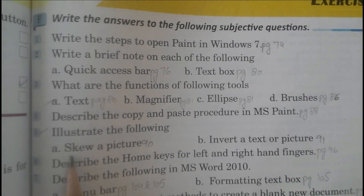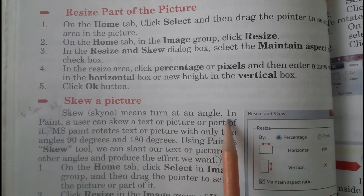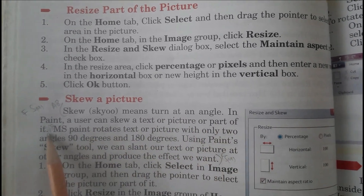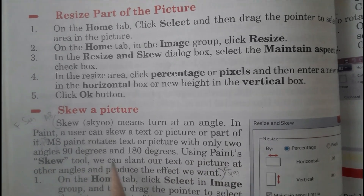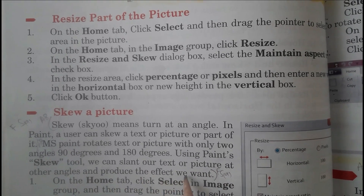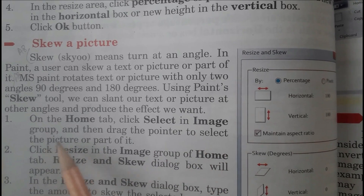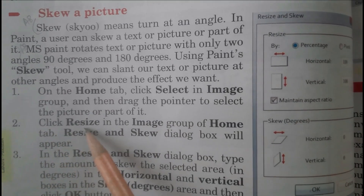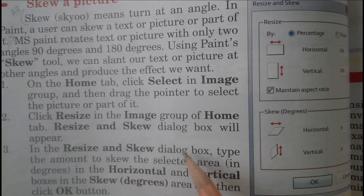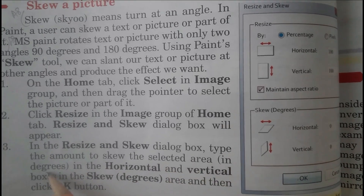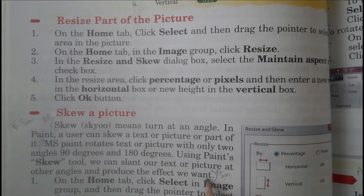Exercise F, Question 5, Part A — Illustrate: Skew a picture. Skew means to turn at an angle. In Paint, a user can skew text or a picture or part of it. MS Paint rotates text or picture with only two angles: 90 degrees and 180 degrees. Using Paint's skew tool, we can slant text or pictures at other angles and produce the effect we want. Steps: on the Home tab click Select, drag to select the area; click Resize; in the dialog box type the skew amount in degrees in Horizontal and Vertical boxes, then click OK. You have to learn these questions.